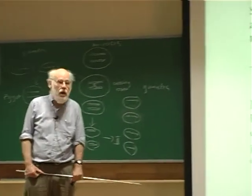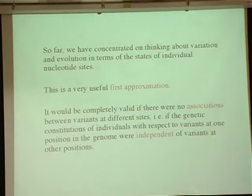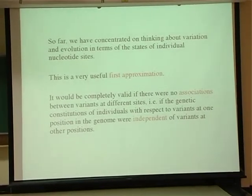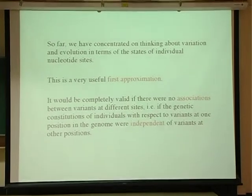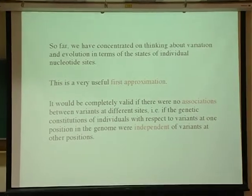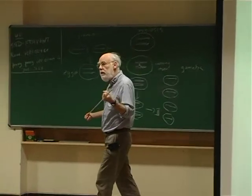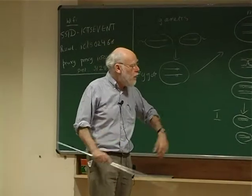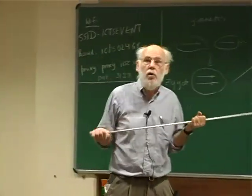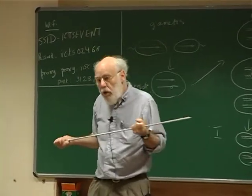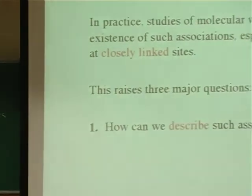That is to say, the genetic constitutions of individuals with respect to what happens at one place in the genome is completely independent of what was going on somewhere else in the genome. Much of quantitative genetics is built up by making this assumption that you can get away with summing up the small effects of individual loci right across the whole genome, and writing down equations for how the phenotypic mean and variance of a trait will change under that assumption. It's a very widely used assumption, but of course it's not completely valid. If we look in populations and study molecular variance, we do in fact find evidence for associations between variants of sites, especially sites which are closely linked genetically.